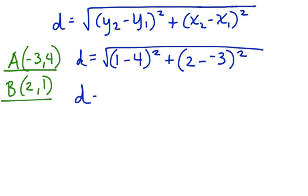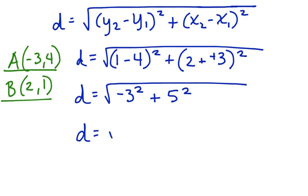Now let's take it one step further and simplify inside the radical. 1 minus 4 is negative 3 squared plus, double negative becomes a positive, 5 squared. d is equal to negative 3 squared which is 9 plus 25.